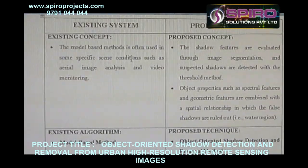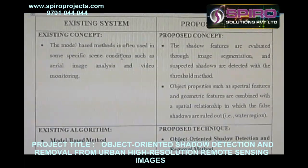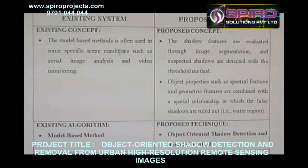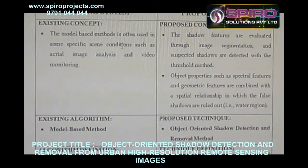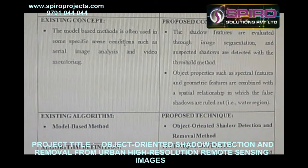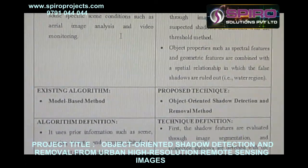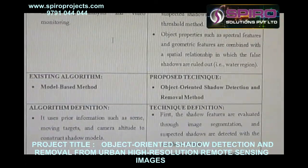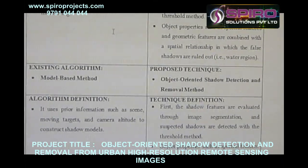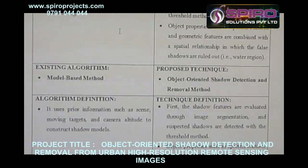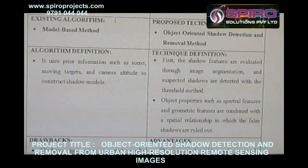Proposed system concept: the shadow features are evaluated through image segmentation and suspected shadows are detected with the threshold method. Object properties such as spectral features and geometric features are combined with the spatial relationship, in which the false shadows are ruled out.